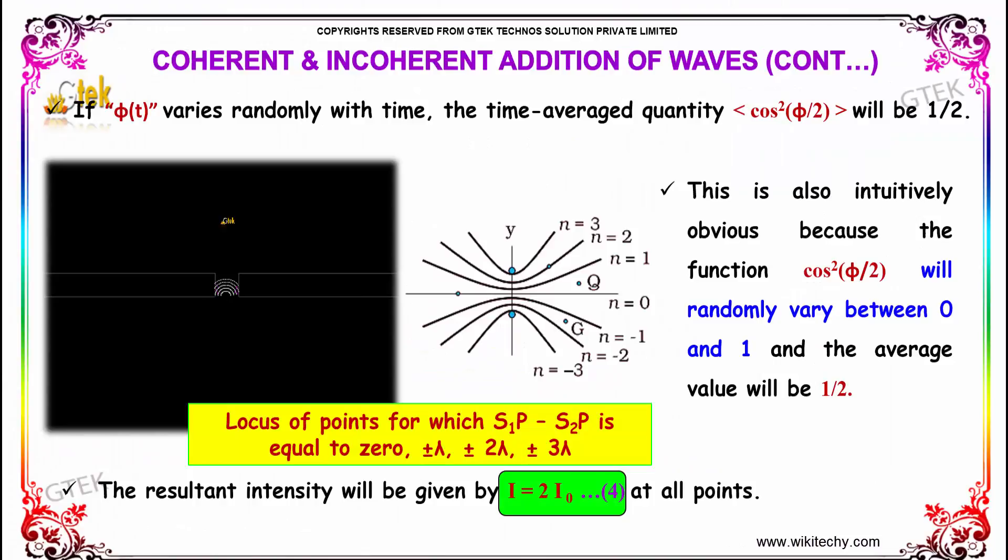If φ(t) varies randomly with time, the time-averaged quantity ⟨cos²(φ/2)⟩ will be 1/2. This is intuitively obvious because the function cos²(φ/2) will randomly vary between 0 and 1, and the average value will be 1/2. Therefore, the resultant intensity will be I = 2I₀ at all points.